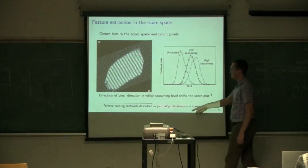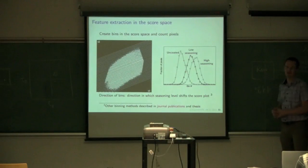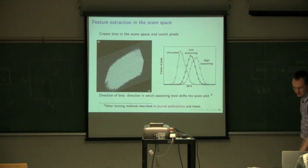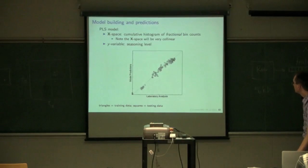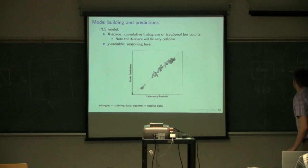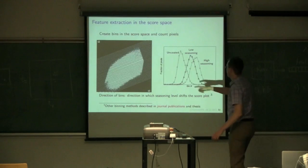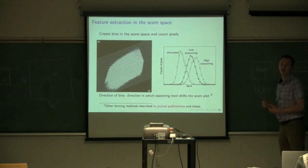If you plot this fractional histogram with the bin number on the x-axis, we see that for an unseasoned image, that's the sort of distribution in the bins. As we get to high seasoning, these are the higher bin numbers further down here, where the score space has shifted. That histogram of the bin counts has shifted over. Now, I'm going to describe several other binning methods, and those are in her journal publications and thesis.